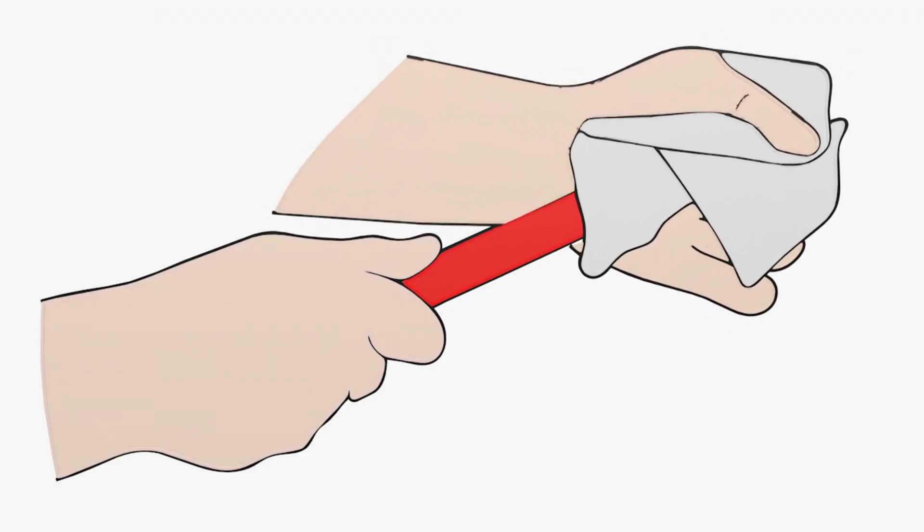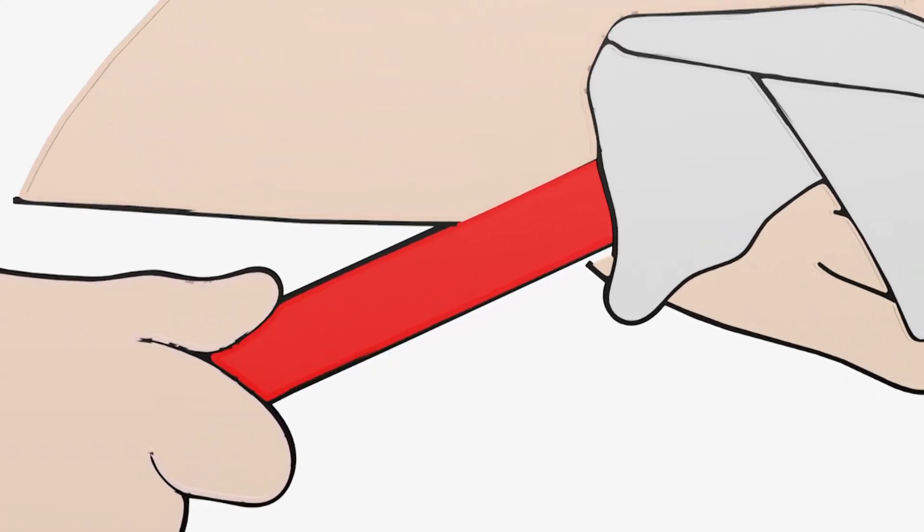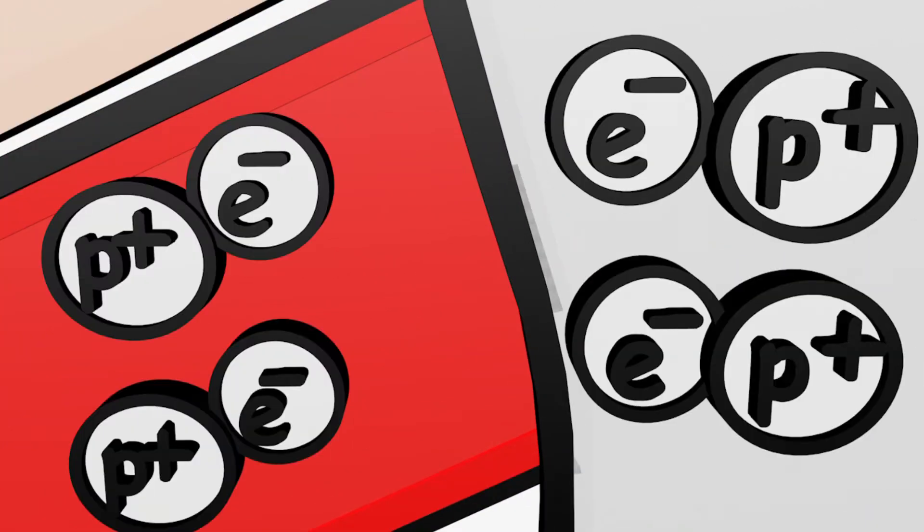First, rub the woolen cloth vigorously on the PVC rod. Before the rubbing, there are as many positive as negative charges on the PVC rod and on the woolen cloth. Since the two charges balance each other out, both bodies appear to be electrically neutrally charged.